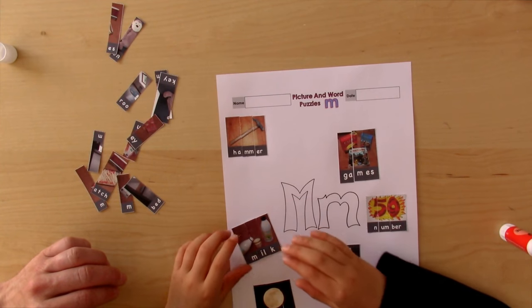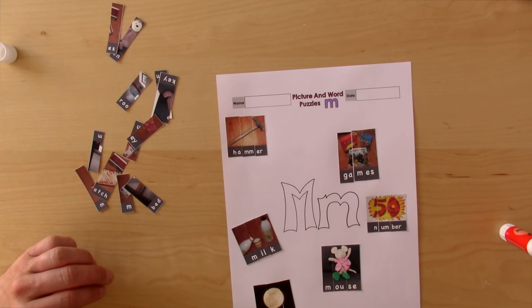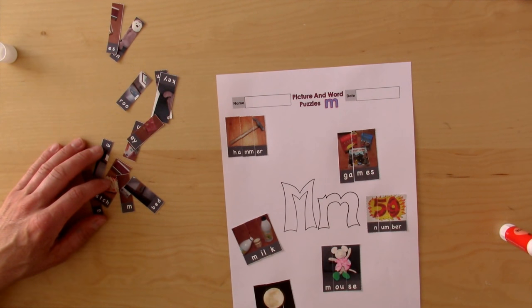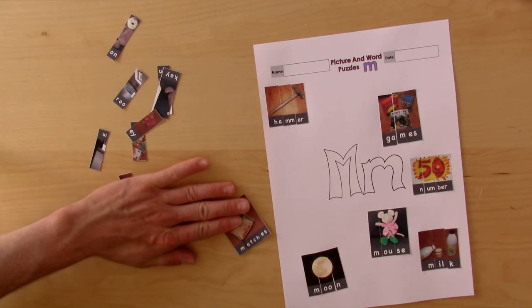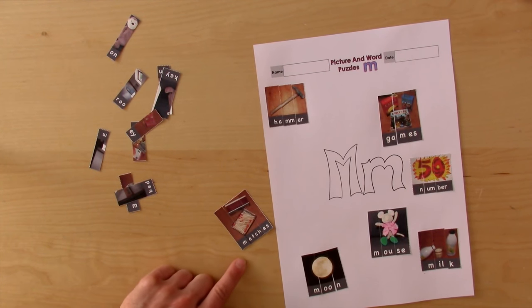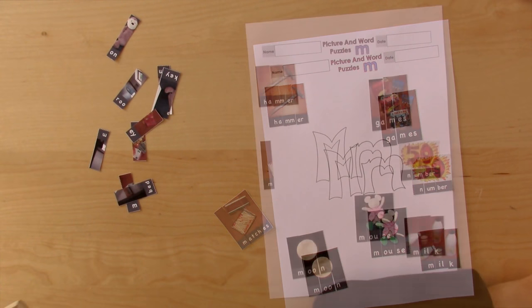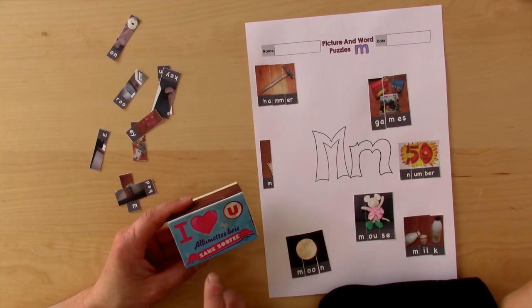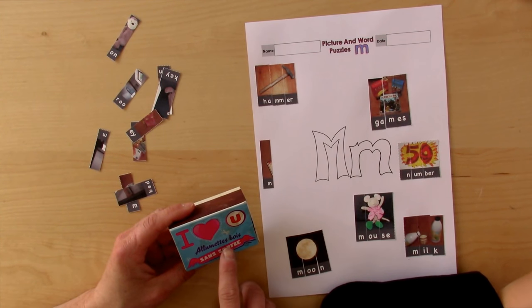Okay, what does that say? Milk. And how would we say milk in French? Du lait. What's that? You could use the sounds. M, A, Ch is matches. Matches. So in French, that one is allumette.